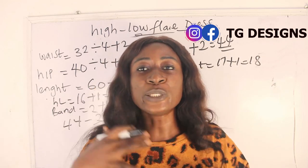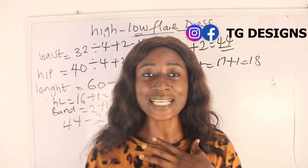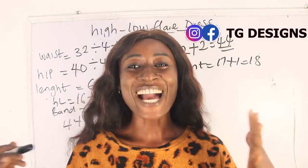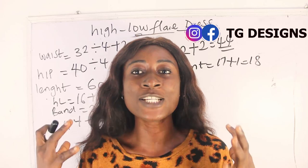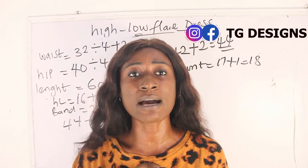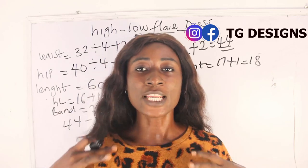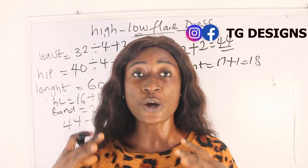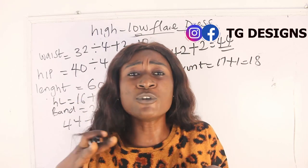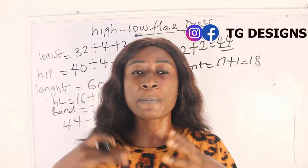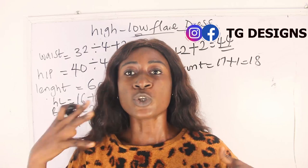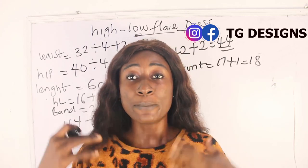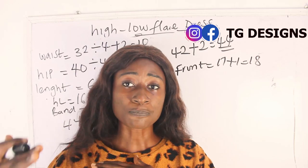This ilo dress also has pleating which is attached to the lower part of the dress. Determine how many inches you want for your pleats and for your basic dress. For me, I'm going with five inches for my pleating. This is optional — you can make it six, seven, or even reduce to four or three inches. It all depends on how you want your high-low dress. This is where your creativity comes in.